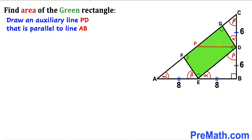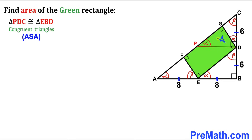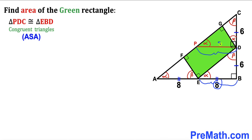Here's our next step. I have drawn this auxiliary line PD that is parallel to line AB. As a result, we get two right triangles: triangle EBD and triangle PDC. Now let's focus on right triangle PDC. We know that this angle is beta, this is our 90 degree angle, so therefore this angle has got to be angle alpha. We conclude that right triangle PDC is congruent to right triangle EBD according to the angle-side-angle congruency theorem, since this side length is the same. Since these two triangles are congruent, if side length EB is 8 units, then side length PD is going to be 8 units as well.